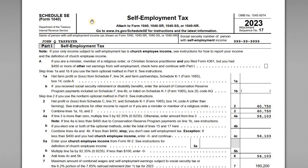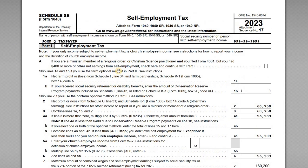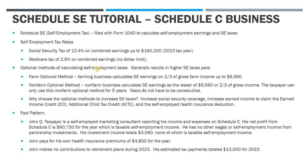For this video I want to go through a sample Schedule SE for self-employment taxes. In this example we're going to have John Q. Taxpayer, who's a self-employed consultant. He's filling out a Schedule C to report his profit or loss from business, and these earnings are going to be subject to self-employment taxes. We'll go through the Schedule SE, Schedule C, and all the other required forms and schedules, plus some background on the self-employment tax and the fact pattern.